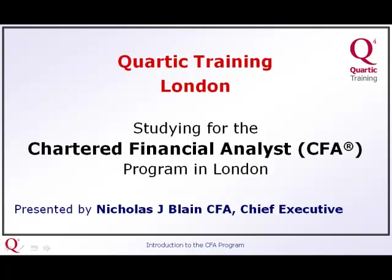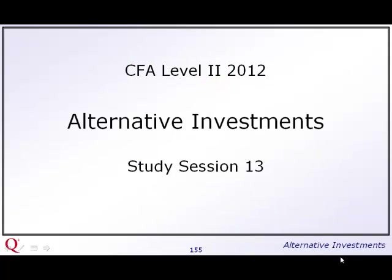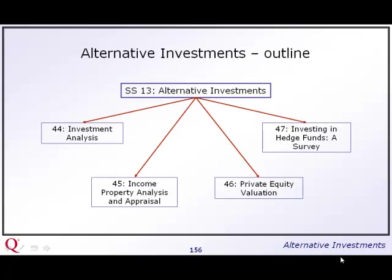Hello and welcome to Quartic Training. Alternative investment is a subject that has changed a lot since it first came into level 2 just a few years ago. It has grown a little bit, though this year it has probably shrunk a little bit since last year. It is 5 to 15%, which means 1 to 3 questions — in practice, probably just one question. As you'll see, this is not a long section.